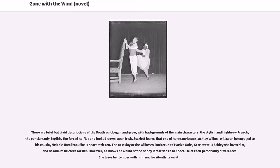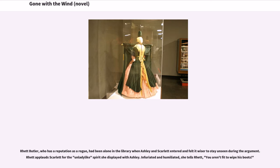She is heartbroken. The next day at the Wilkes' barbecue at Twelve Oaks, Scarlett tells Ashley she loves him, and he admits he cares for her. However, he knows he would not be happy if married to her because of their personality differences. She loses her temper with him, and he silently takes it. But Rhett Butler, who has a reputation as a rogue, had been alone in the library when Ashley and Scarlett entered and felt it wiser to stay unseen during the argument. Rhett applauds Scarlett for the unladylike spirit she displayed with Ashley.